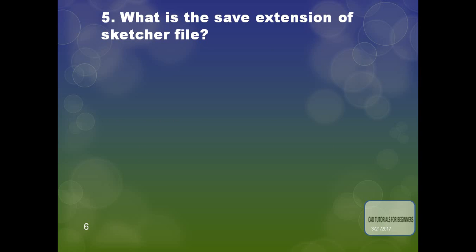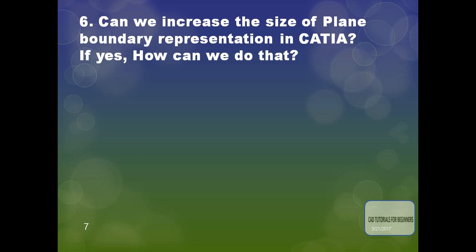What is the file extension of a sketcher file? That is .CATPart. The sketcher file has the same extension as a part file, which is .CATPart, and assembly is .CATProduct.